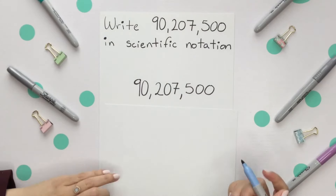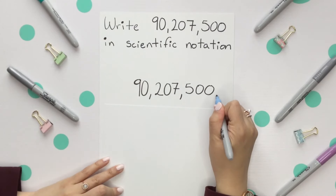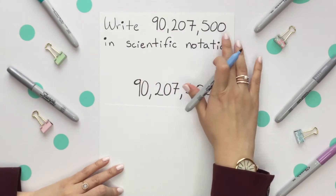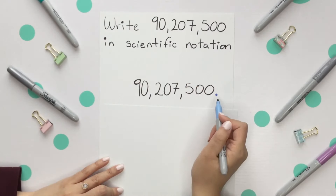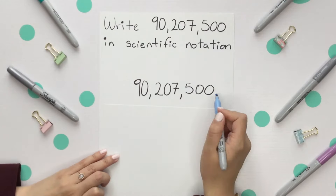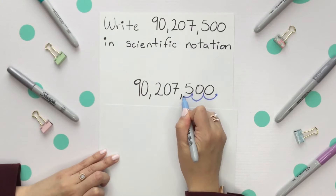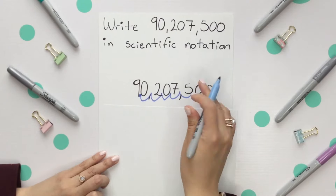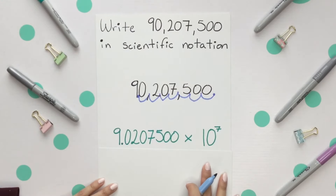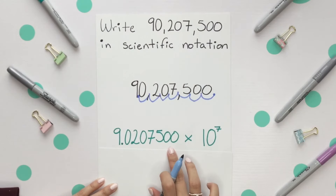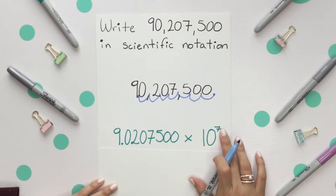Your decimal place is always after the last value since there wasn't initially a decimal place. We're going to move it all the way over to the 9, because that's our first non-zero number — counting 1, 2, 3, 4, 5, 6, and 7. So our setup will be 9.0 followed by all the remaining numbers, times 10 to the positive 7th, because we moved that decimal place over 7 times.